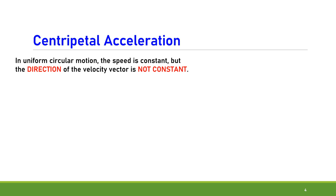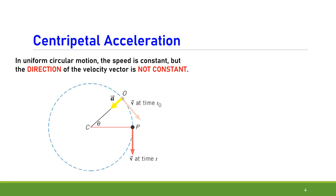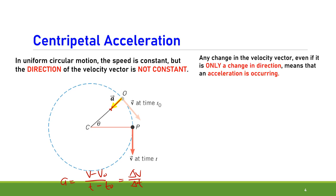In uniform circular motion, the speed is constant, but the direction of the velocity vector is not constant. We can see in the figure that the acceleration is directed toward the center. Since velocity is not constant, acceleration is not zero. Any change in the velocity vector, even if it is only a change in direction, means an acceleration is occurring. This acceleration is called centripetal acceleration, and it equals v² divided by r.